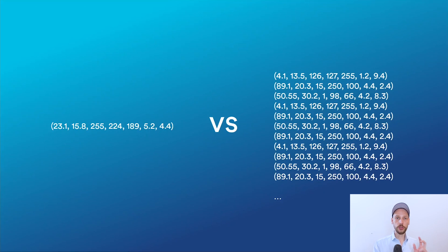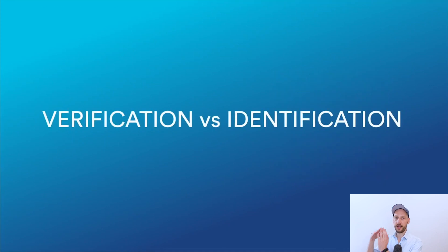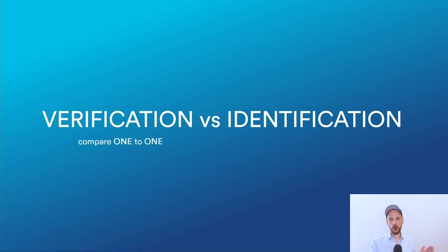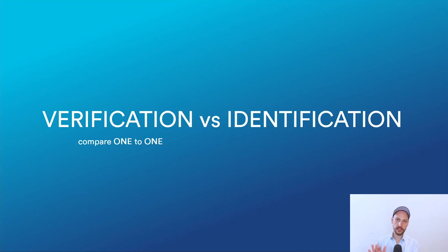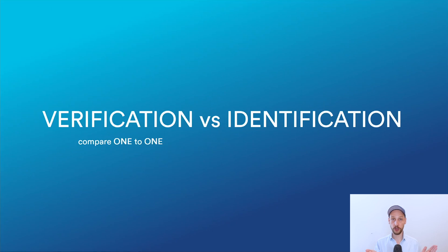One important distinction is that there are two types of face recognition: verification and identification. In practice they may look similar, but technically they're very different in complexity. Verification is a one-to-one comparison. A good example is passport control — the system takes the image from your passport and compares it to the person in front of the camera to verify they're the same person. It's also what your phone does when you unlock it with your face, since your phone already knows who to expect.